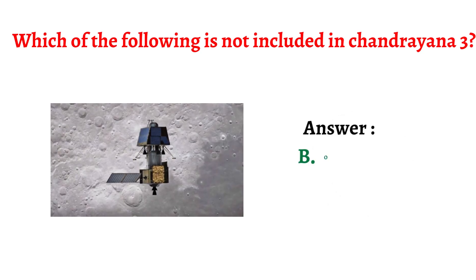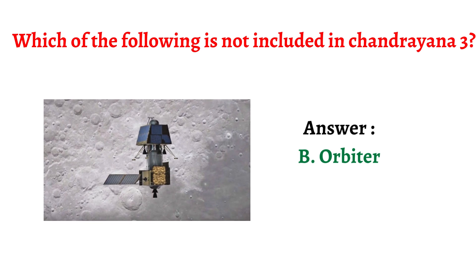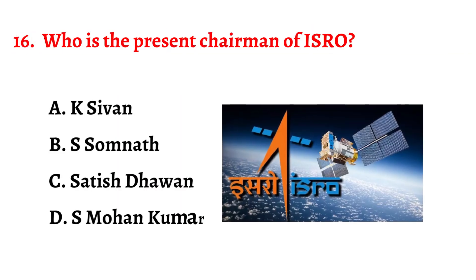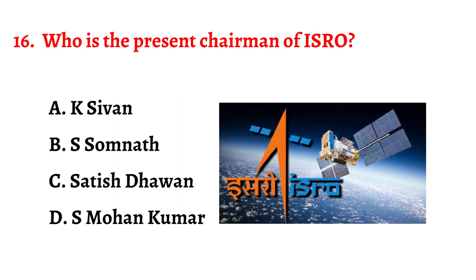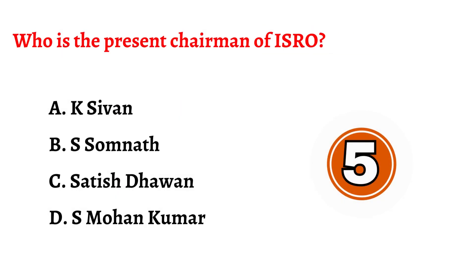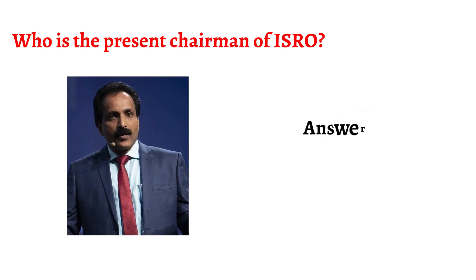Question number fifteen: Which of the following is not included in Chandrayaan 3? The correct answer is option B: orbiter.